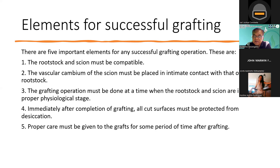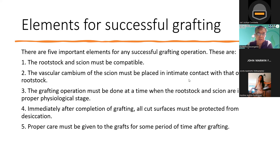There is a project by the Bureau of Plant Industry where they produce grafted seedlings. The rootstock is patolak and the scion is matis. They also graft silig. So normally, they should fall under one family. The grafting operation must also be done at a time when both the rootstock and scion are in the proper physiological stage — meaning both are healthy. So when choosing your material, check the status of the rootstock; if it is already declining, wag mo nang gamitin.